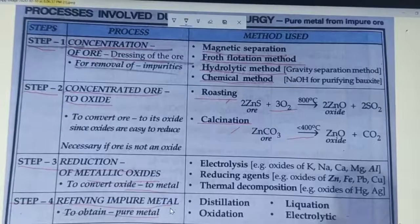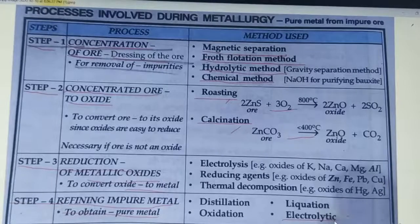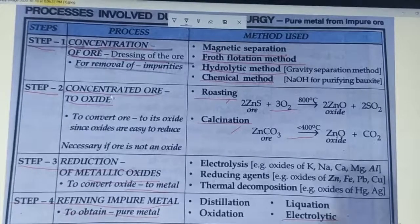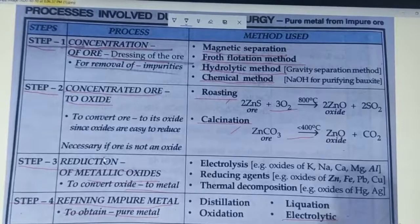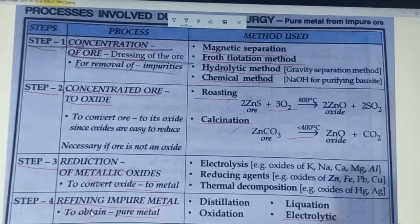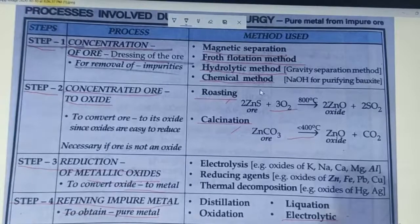It has already been done in the chapter electrolysis, in which the most important part is electrolytic method. So these are the four steps: concentration of ore, concentrated ore to oxide conversion, reduction of metal oxide to metal, and finally refining.